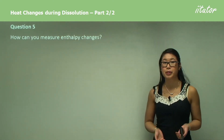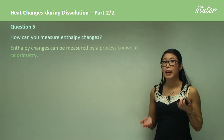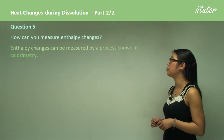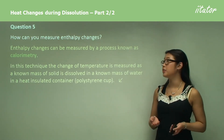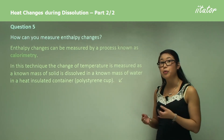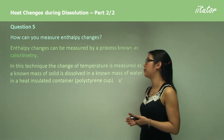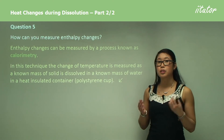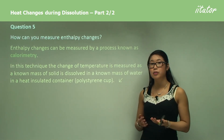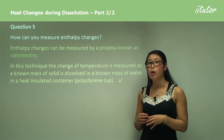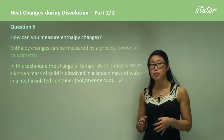Question five: how can you measure enthalpy changes? Enthalpy changes can be measured by a process known as calorimetry — a technique to look at the change of temperature of a known mass of solid dissolved in a known amount of water in a heat-insulated container, so we can accurately measure changes in heat. What we're looking at today is the dissolution of salt: when we dissolve salts in water, is the solution going to be endothermic — taking in energy and feeling cold — or exothermic — releasing energy into the surroundings and feeling hot?